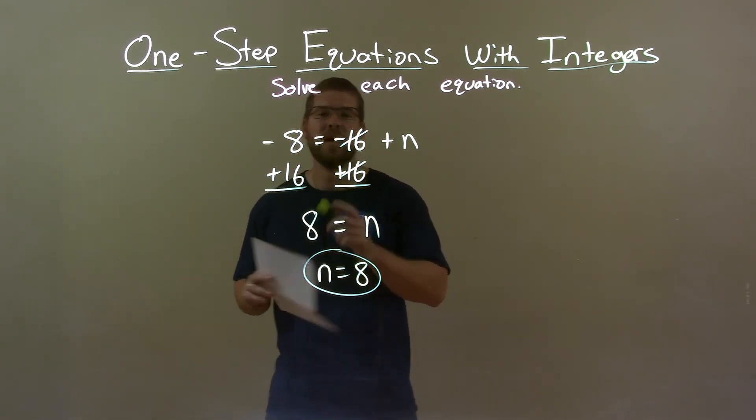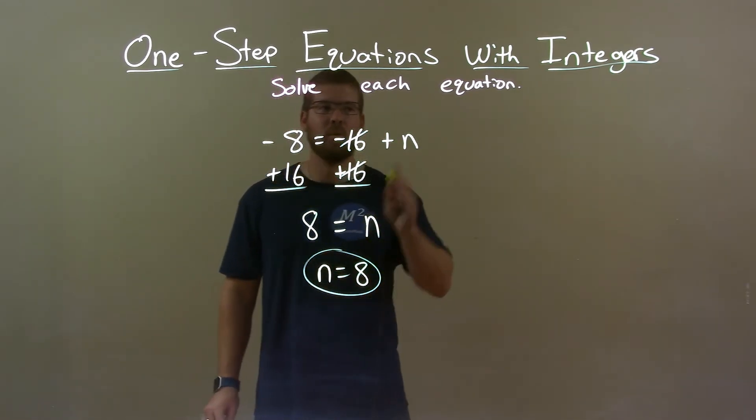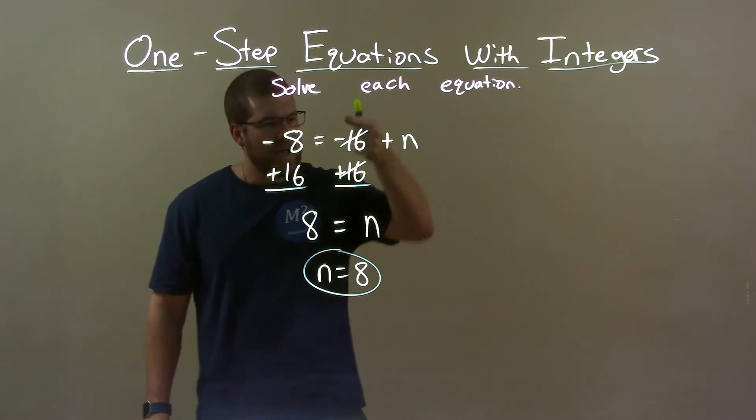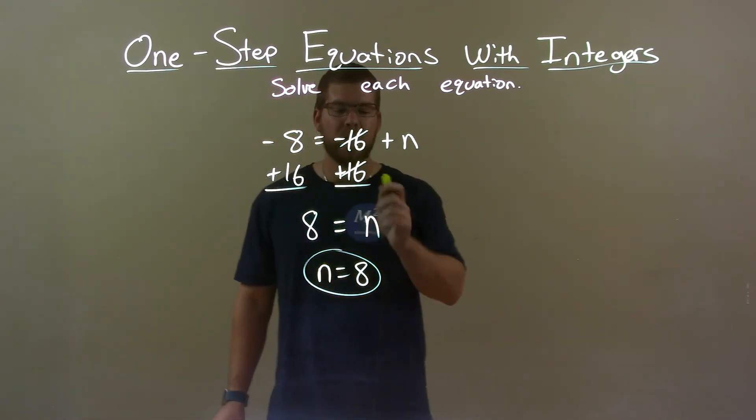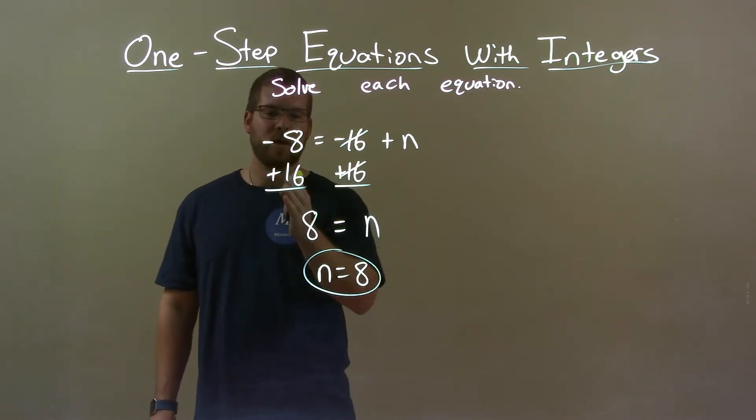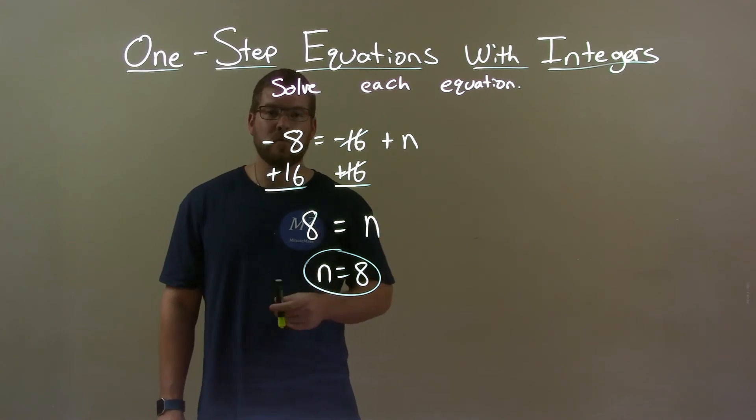Quick recap. We're given negative 8 equals negative 16 plus n and we need to solve for n. I add positive 16 to both sides, which eliminates the negative 16 on the right, giving me n by itself. Negative 8 plus 16 is positive 8. So again, final answer: n equals positive 8.